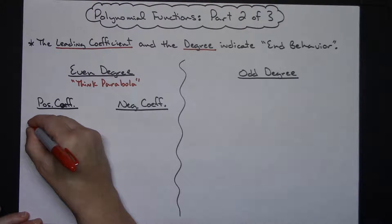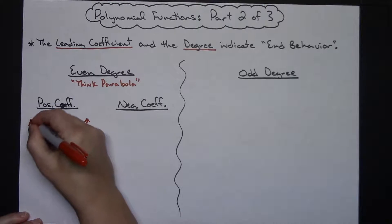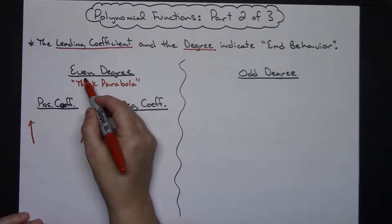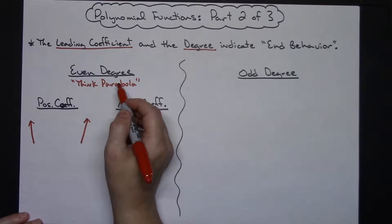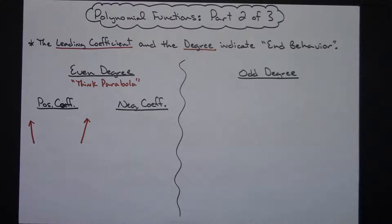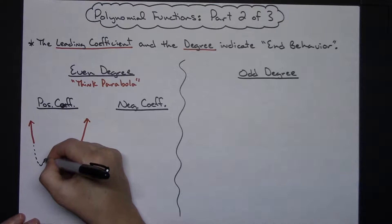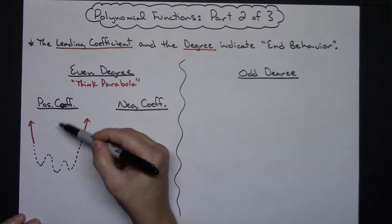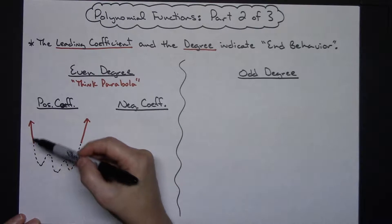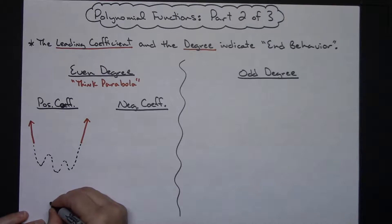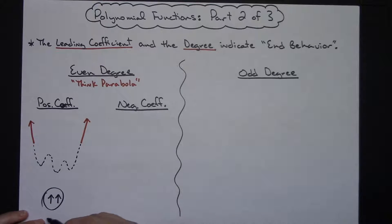For a basic parabola with a positive leading coefficient and even degree, it would look like that. Any even degree — like x to the fourth, sixth, or eighth — is just going to add lots of hills and valleys in between, and later you can indicate how many turns are in the graph. But the end behavior for this one is up, up. I let students write two little arrows pointing up to indicate that end behavior.